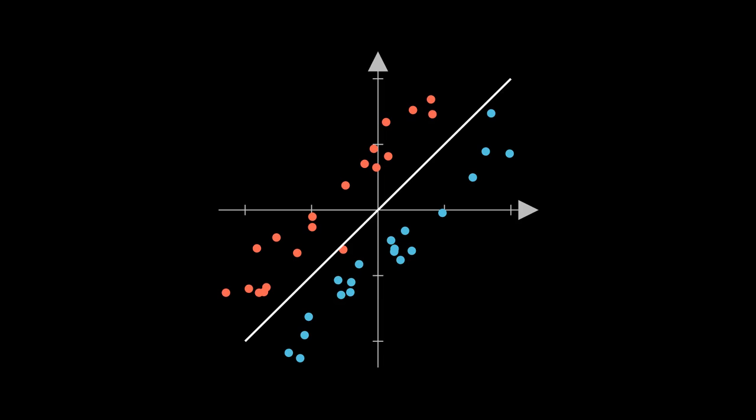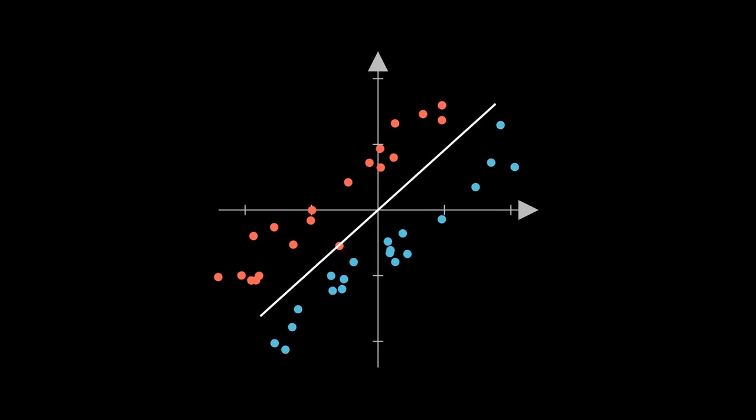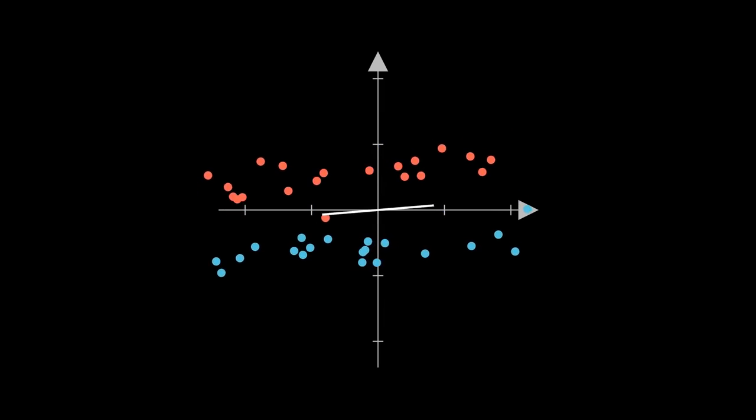Now, before we proceed further, I'm going to change the way we visualize the decision boundary. Instead of rotating the line to fit the data, I'd like us to rotate the data to fit a predetermined line. This doesn't really change the math at all, and might even look silly at the moment, but I promise it'll make things clearer as our straight lines start to become limited.